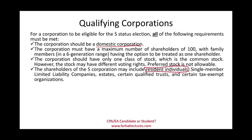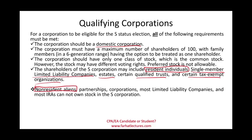Eligible shareholders include: resident individuals, single-member LLCs, estates, certain qualified trusts, and certain tax-exempt organizations. However, the following cannot own stock in an S corporation: non-resident aliens, partnerships, C corporations, most limited liability companies, and most IRAs. This is a common exam topic — especially note that non-resident aliens and partnerships cannot be S corporation shareholders.